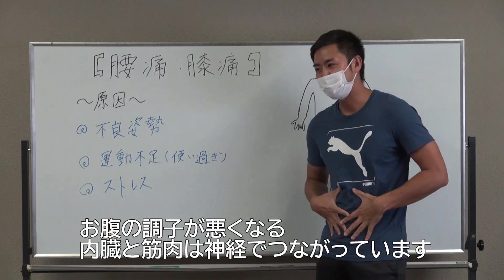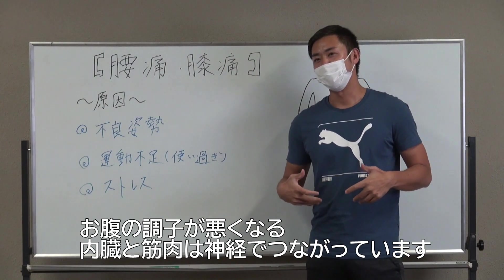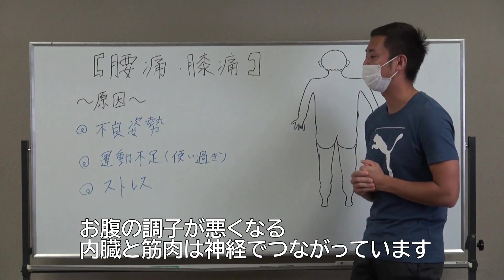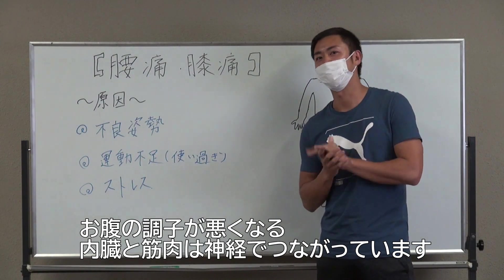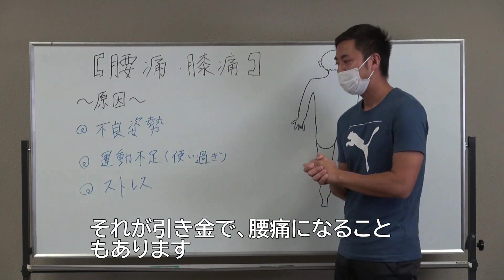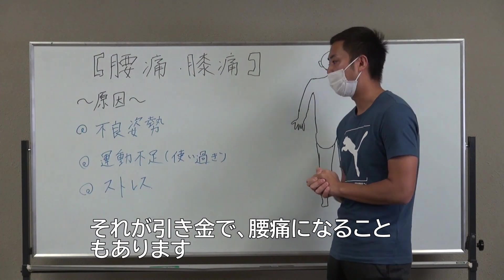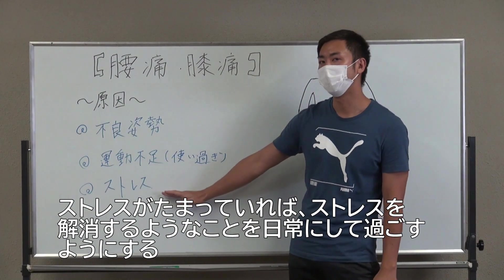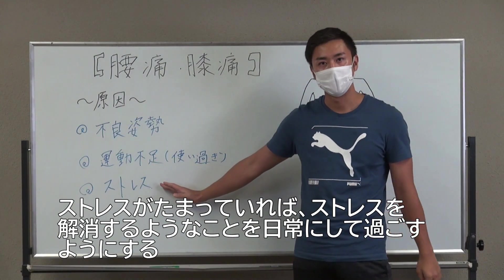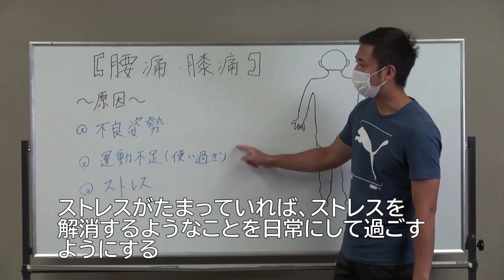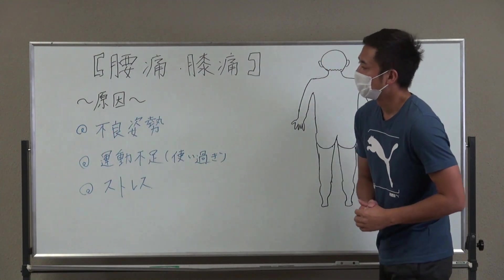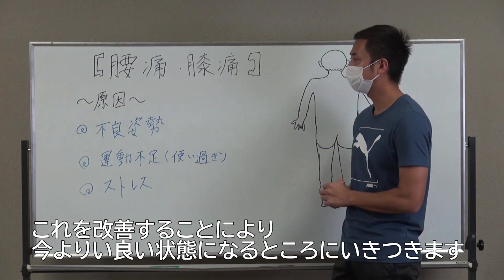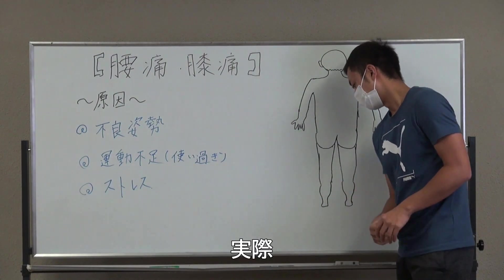また、気持ち的な部分で、イライラしてるとかすごく嫌な気持ちになったりとかしてると結構お腹の調子が悪くなったりすることもあります。内臓と筋肉は結構神経でつながっている部分があるので、それが原因で筋肉の働きを悪くして、それが引き金になって腰痛になるということがすごく多かったりもするので、できる限りストレスをたまっているならばそれを解消するようなことをしてあげることが日常生活にも必要になってくると思います。